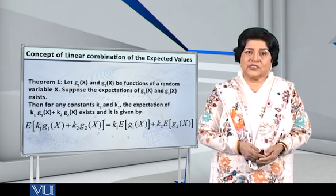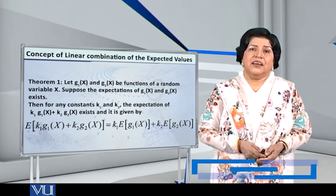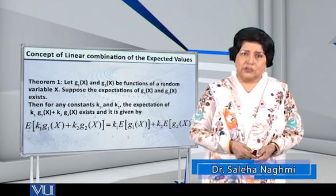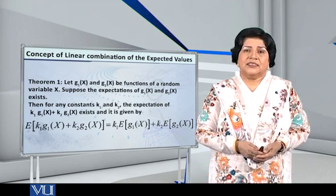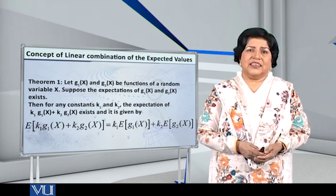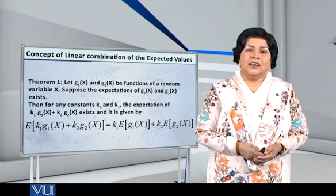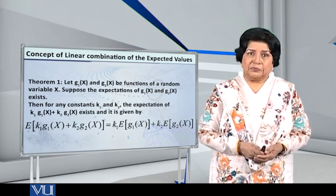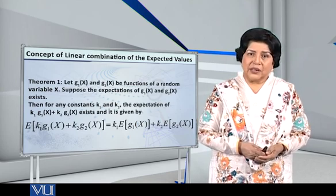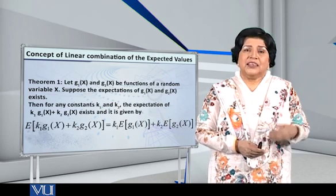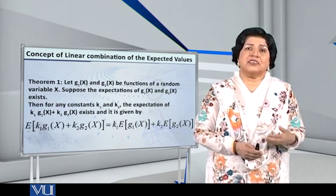Let g1(x) and g2(x) be two different functions of a random variable x. Suppose that the expectations, the mathematical expectations of g1(x) and g2(x) exist. Then for any two constants k1 and k2, the mathematical expectation of the linear combination of g1(x) and g2(x) given by k1 into g1(x) plus k2 into g2(x), the expectation of this linear combination exists and is given by the following equation.